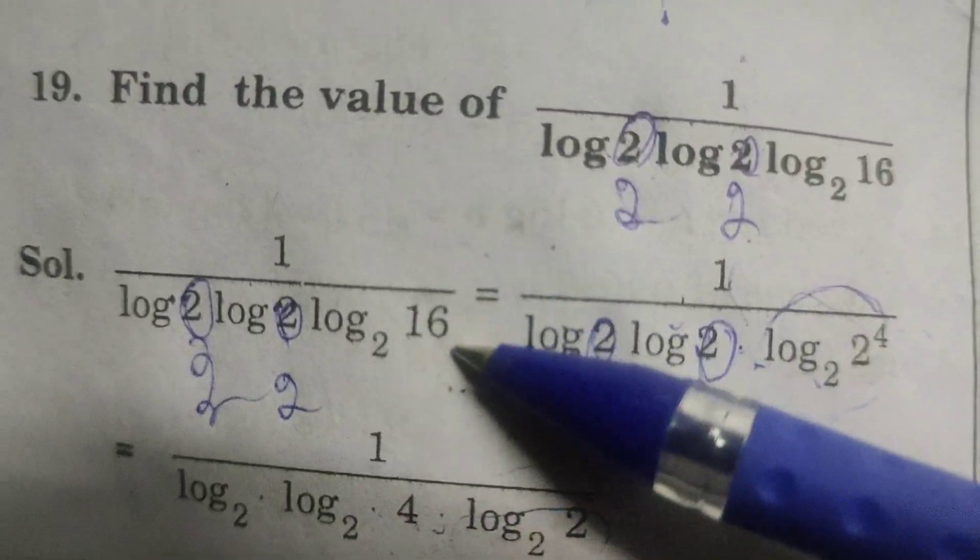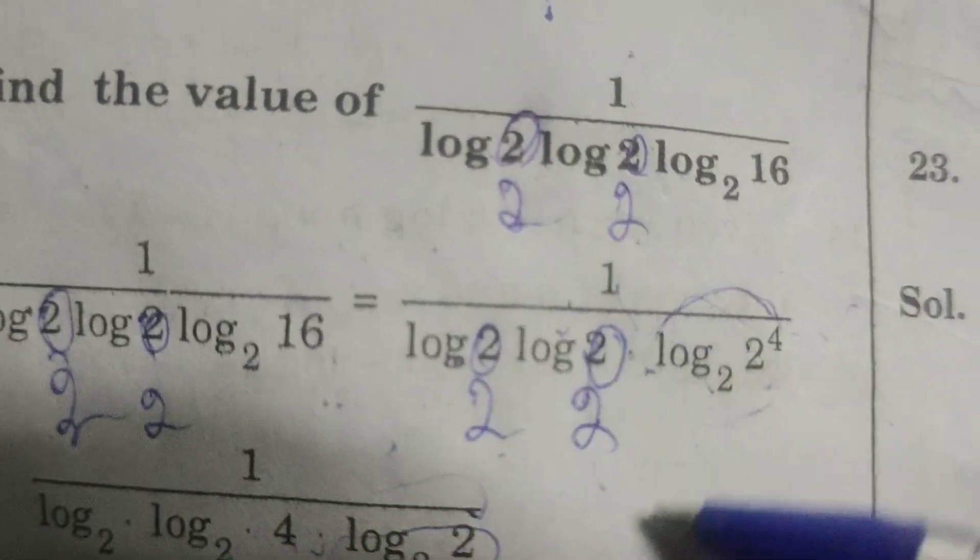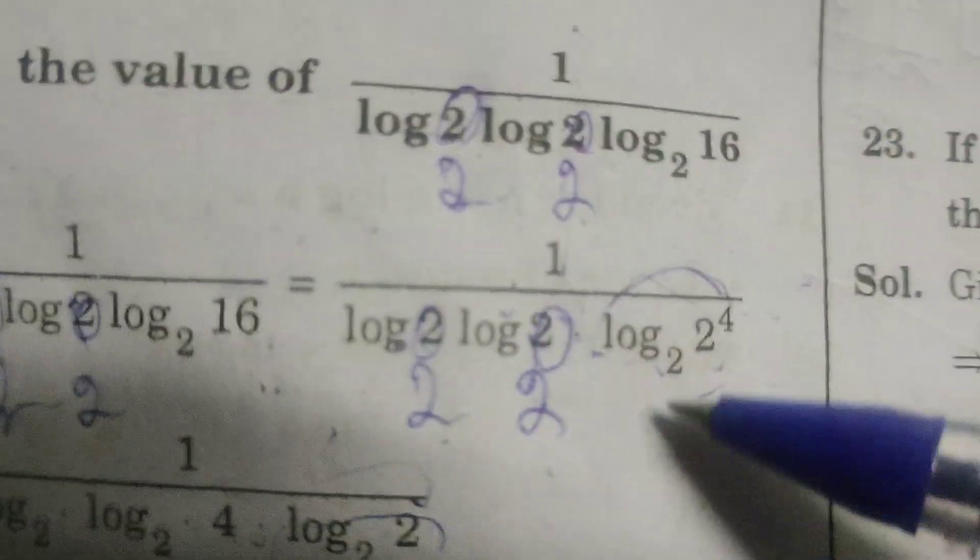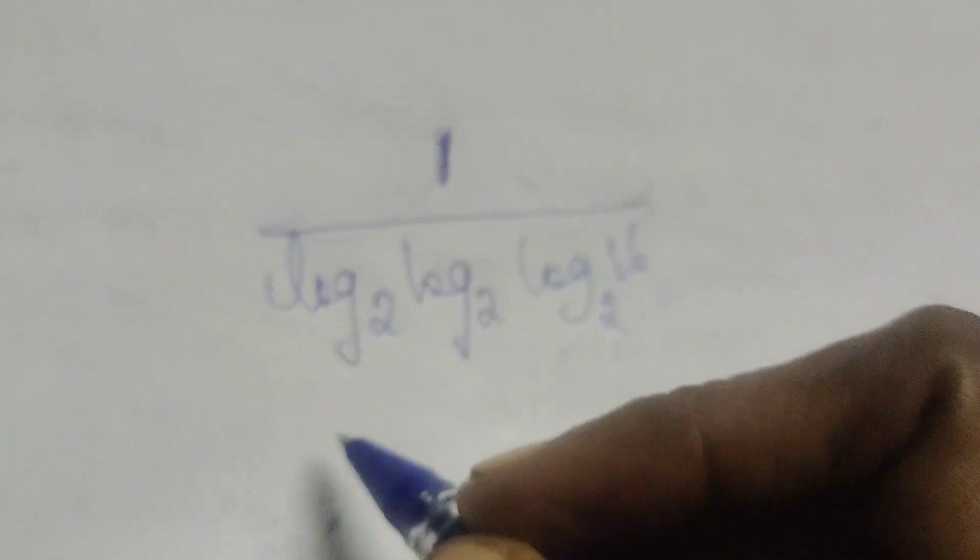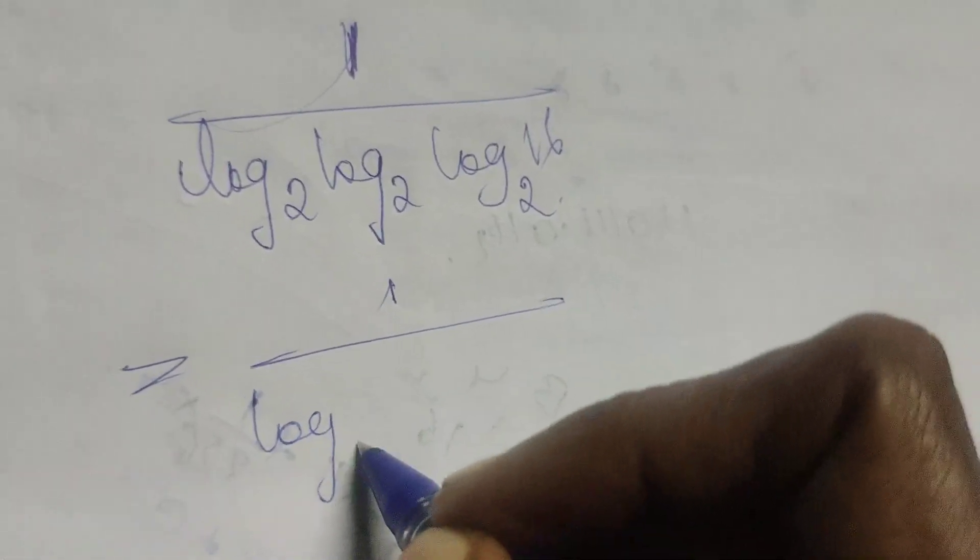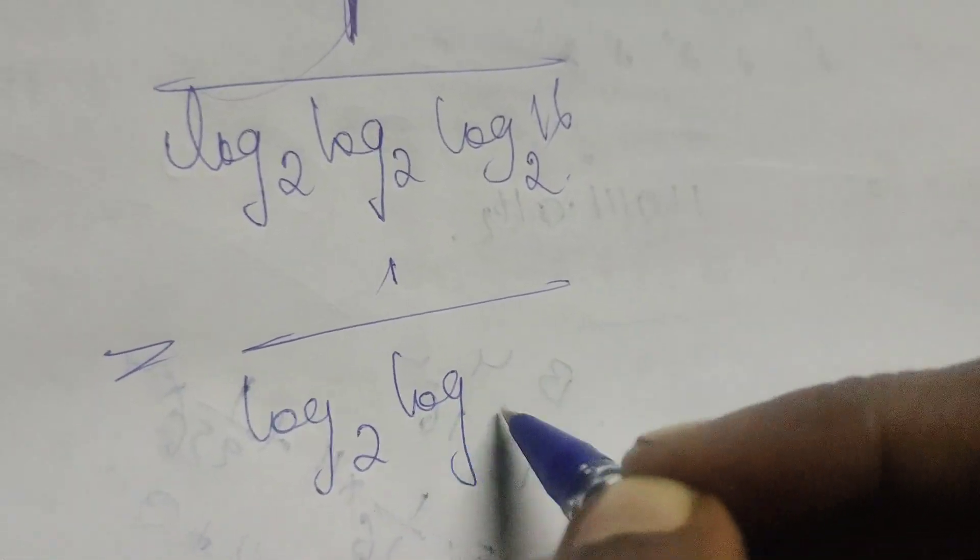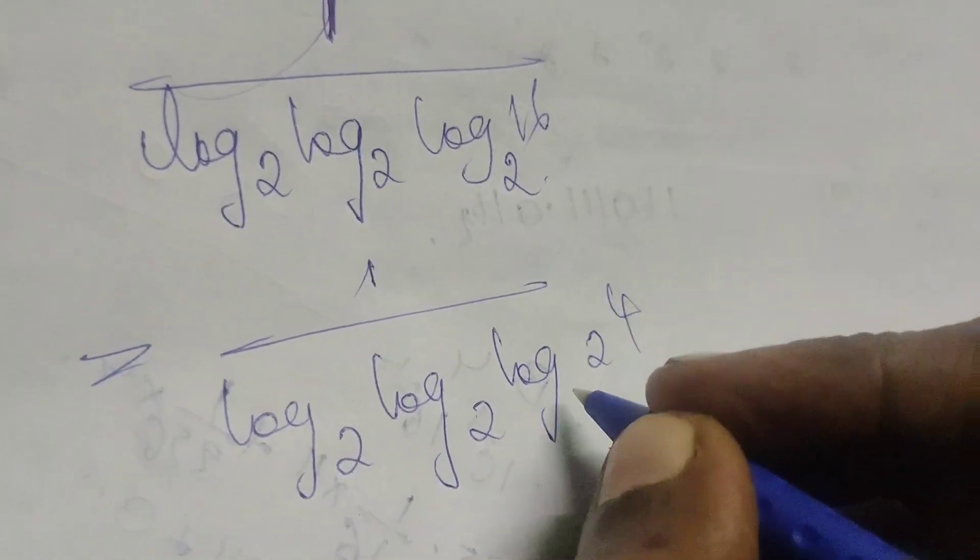First of all, 16 equals 2 to the power 4. So we have 1 over log base 2, log base 2 by the given problem. Here, 16 equals 2 power 4, so now we have 1 over log base 2, log base 2, log base 2 of 2 to the power 4.